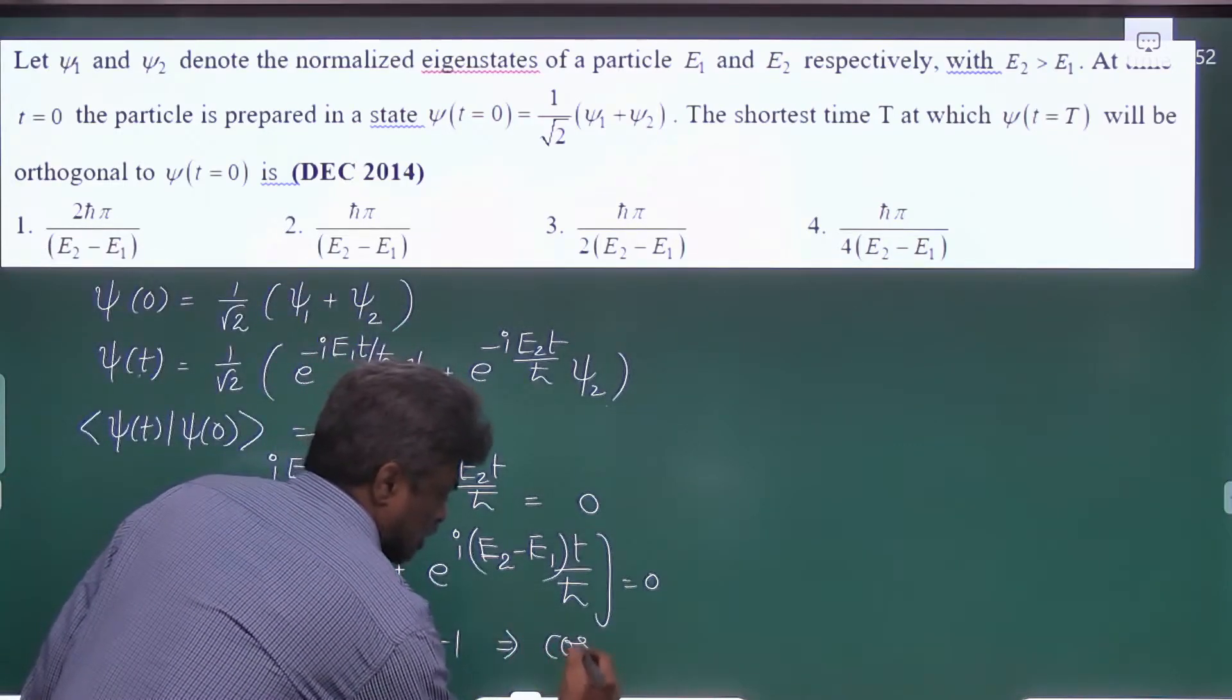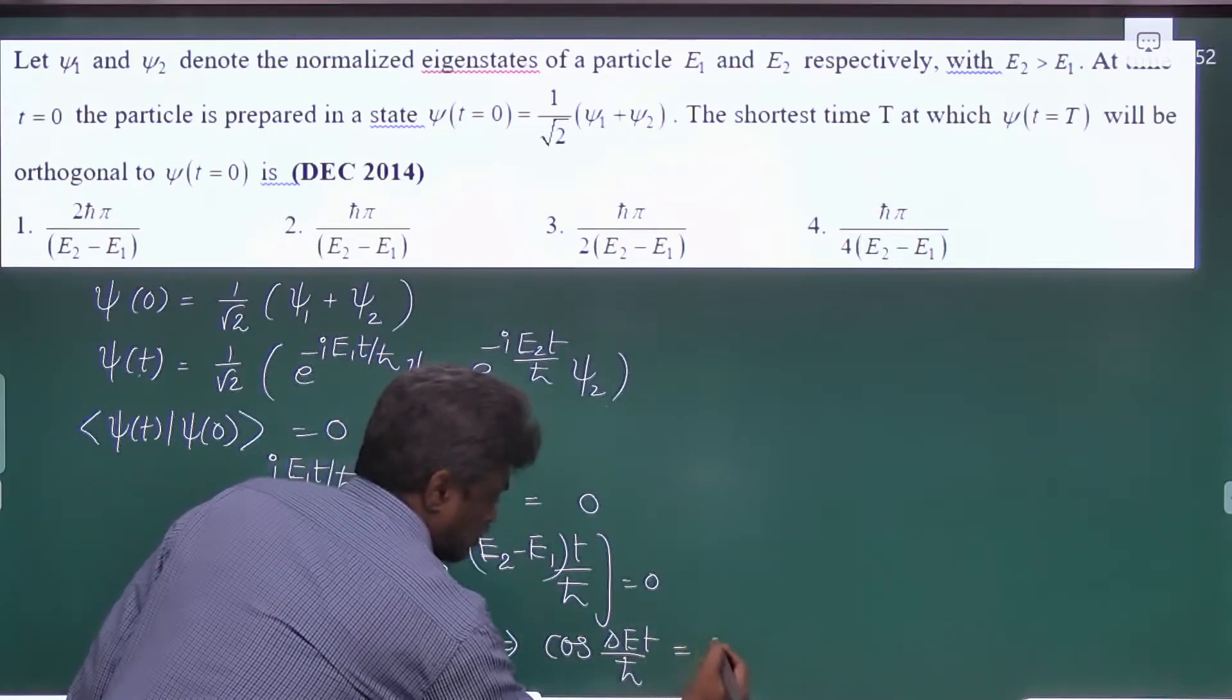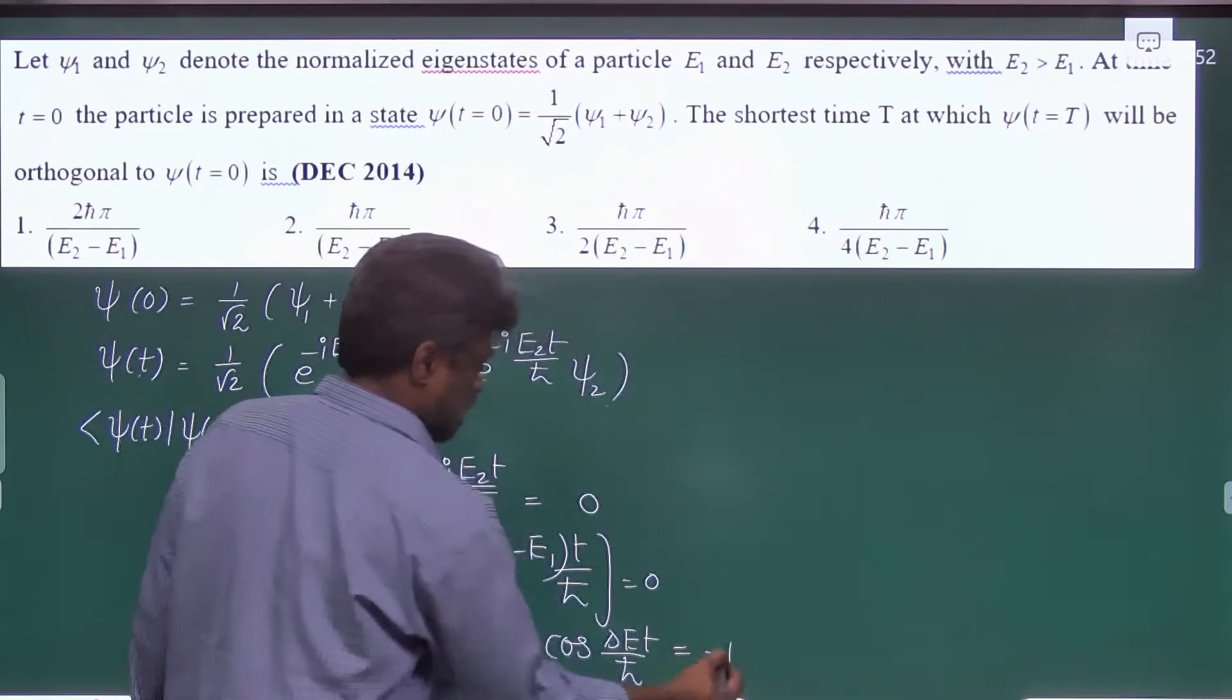so if you equate the real and imaginary part, this will be cos delta E t by h cross. And here there is no imaginary part; the real part is minus 1.